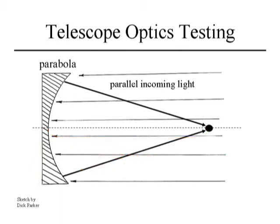We can get a null return if we do a test with a parabola and have parallel incoming light. We can put our razor blade or Ronchi screen at the focus. If we have a razor blade, we'll have a uniform cutoff; with a Ronchi screen, straight parallel lines. That principle was used in testing before bench testing existed. Telescope makers would make their mirrors, take them out at night, aim them at a star, and perform this null test — though you had to hope for good weather conditions, making it a very cumbersome and bothersome test.